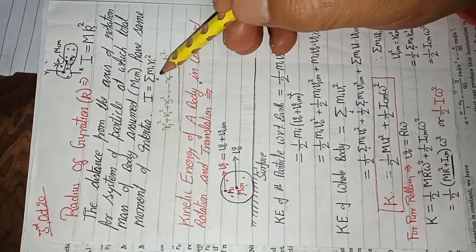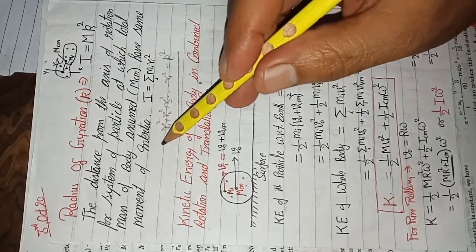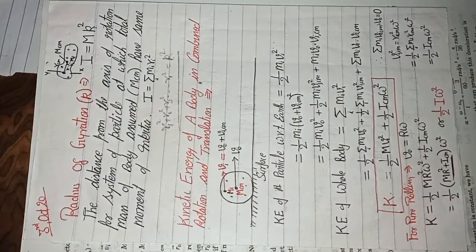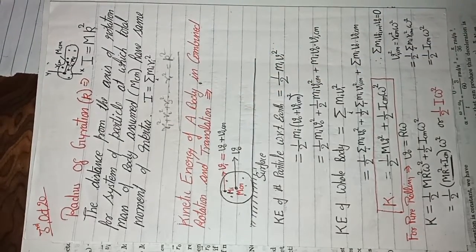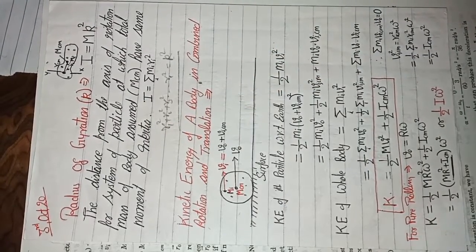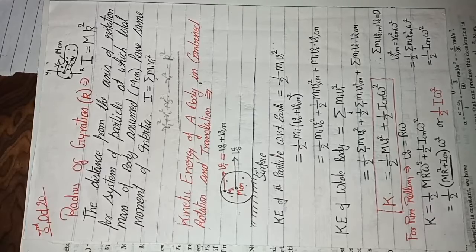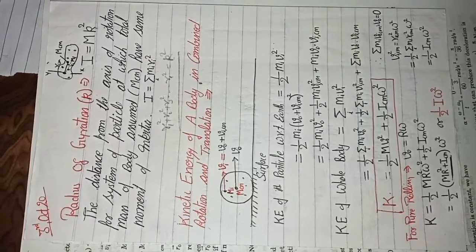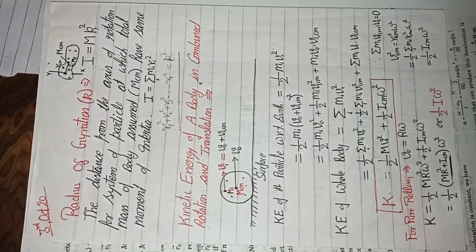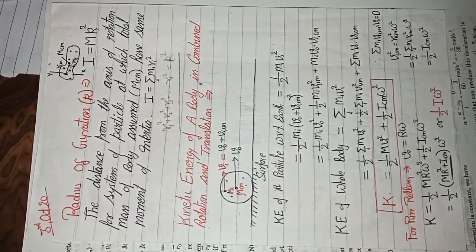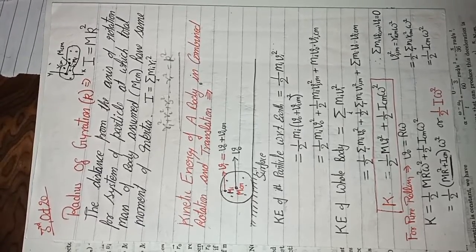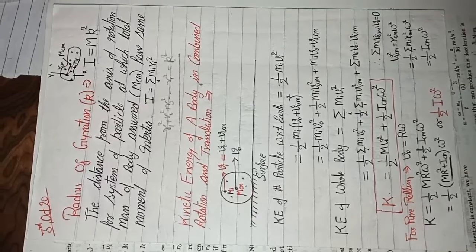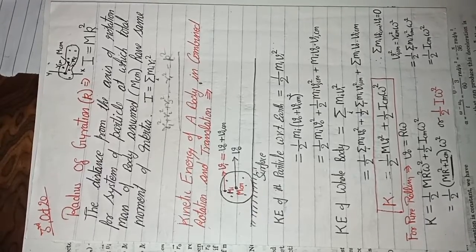This is called the radius of gyration, where k is the radius of gyration. If I have to find k, I will take the square root of this expression. So the radius of gyration is that distance from the axis of rotation at which the total mass — that is, the center of mass of the system of particles — is lying. This is called the radius of gyration.